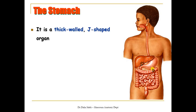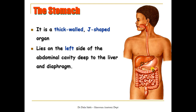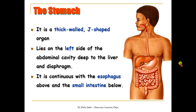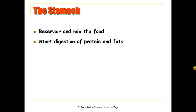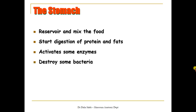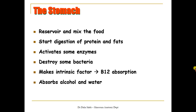Next is the stomach — a thick-walled muscular organ that looks like the letter J. It lies on the left side of the abdominal cavity, deep to the liver and diaphragm, continuous with the esophagus above and the small intestine below. The stomach acts as a reservoir where food is mixed; digestion of proteins and fat begins there. Its acidity activates enzymes, destroys bacteria, and produces intrinsic factor important for nutrient absorption.